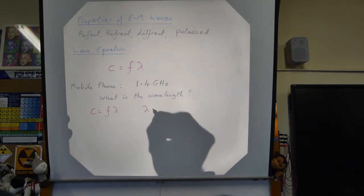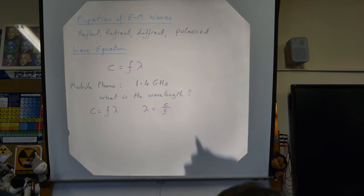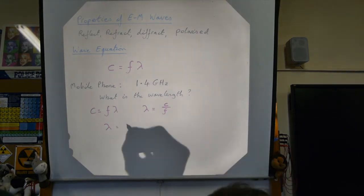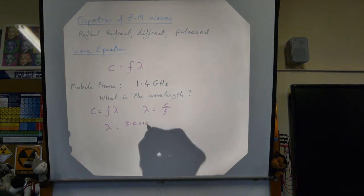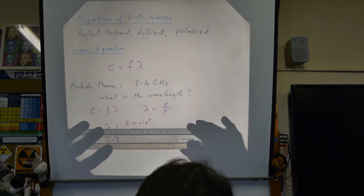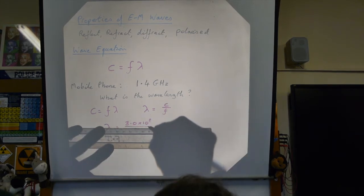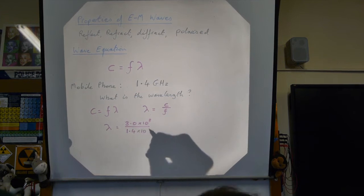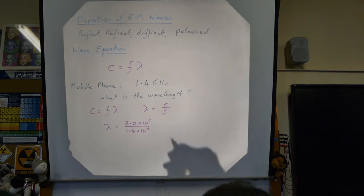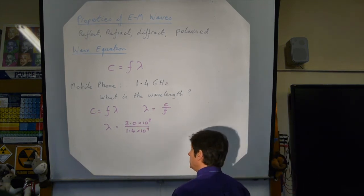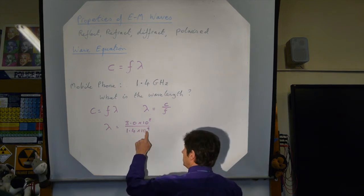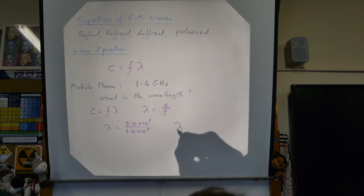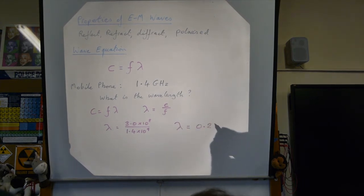Wavelength is c — 3.0 times 10 to the 8 metres per second — divided by the frequency: 1.4 gigahertz, that's 1.4 times 10 to the 9 hertz. You'll notice this is 10 to the 8 over 10 to the 9, so this is about a tenth. Lambda comes out as 0.21 metres.